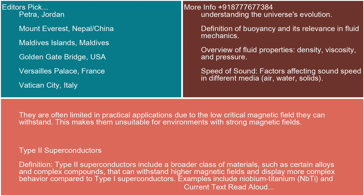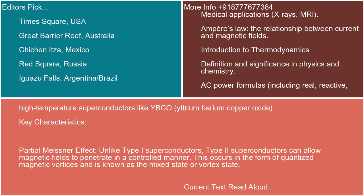Type II superconductors — definition. Type II superconductors include a broader class of materials, such as certain alloys and complex compounds, that can withstand higher magnetic fields and display more complex behavior compared to Type I superconductors. Examples include niobium-titanium (NbTi) and high-temperature superconductors like YBCO, yttrium-barium copper oxide.